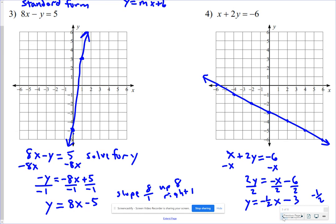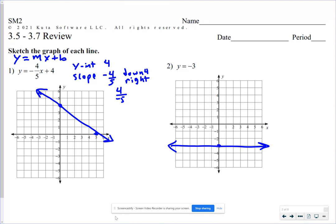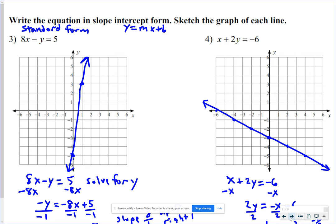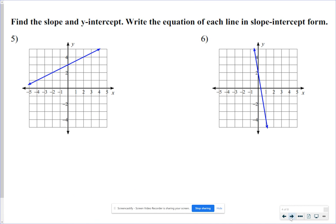Moving on to problem number 5. Find the slope and the y-intercept. Write the equation in slope-intercept form. So what you're going to have to do is find the slope and the y-intercept from the graph. So for problem number 5, the y-intercept is right here at 3. So the b-value is 3. For our slope, remember, slope is rise over run.